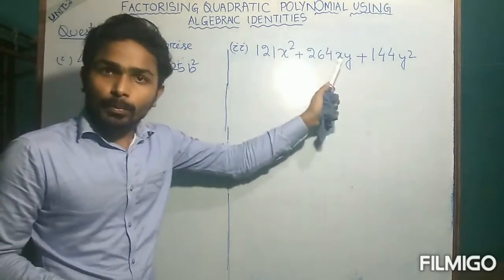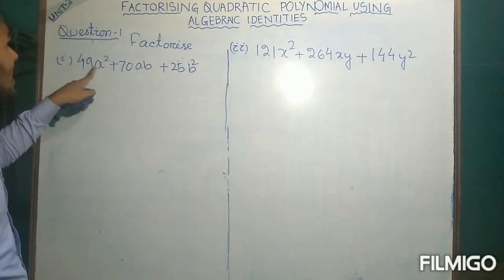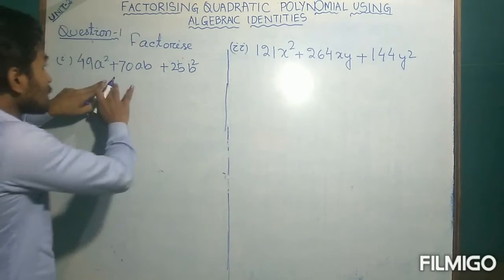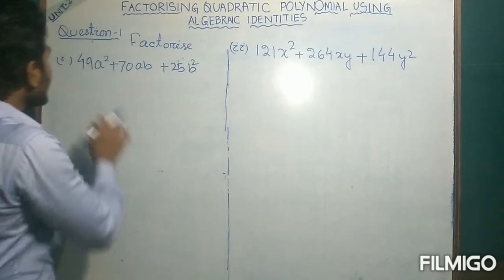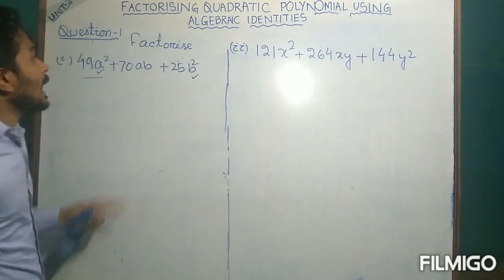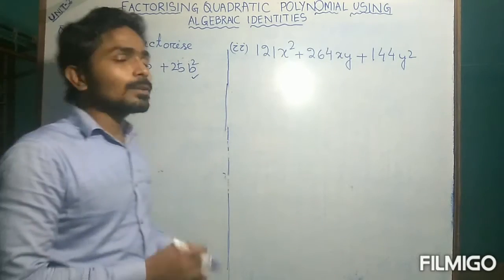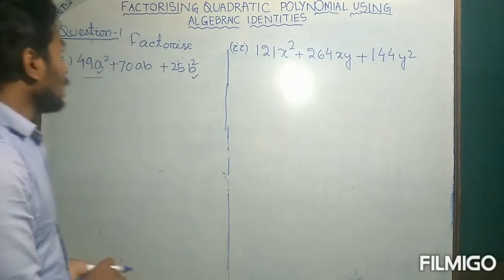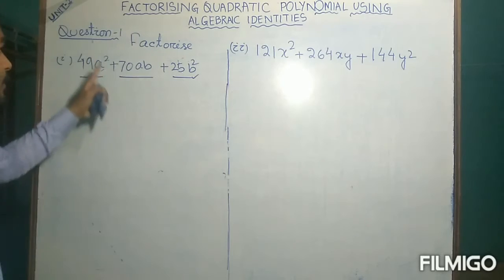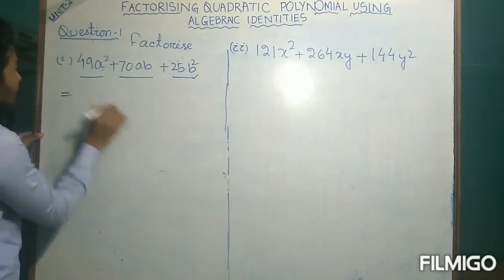We need to factorize this quadratic polynomial. In question number 1 we have 49a² + 70ab + 25b². First, tell me whether it is a quadratic polynomial or not. Since it has two variables — a and b — and both variables have power 2, it is degree 2, so it is a quadratic polynomial. Now how can we factorize it?